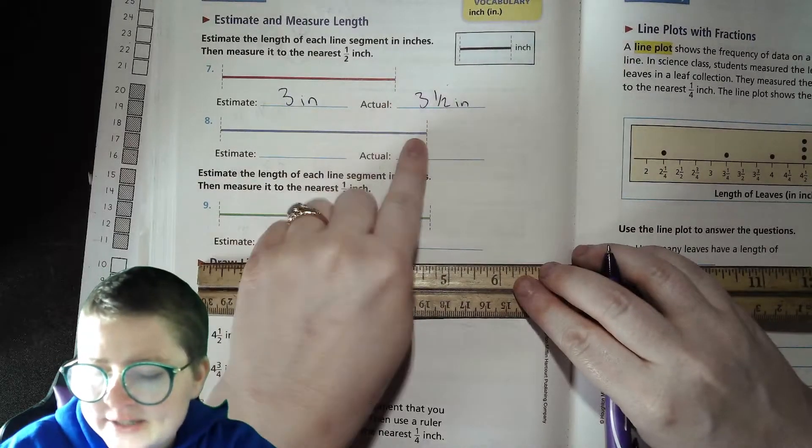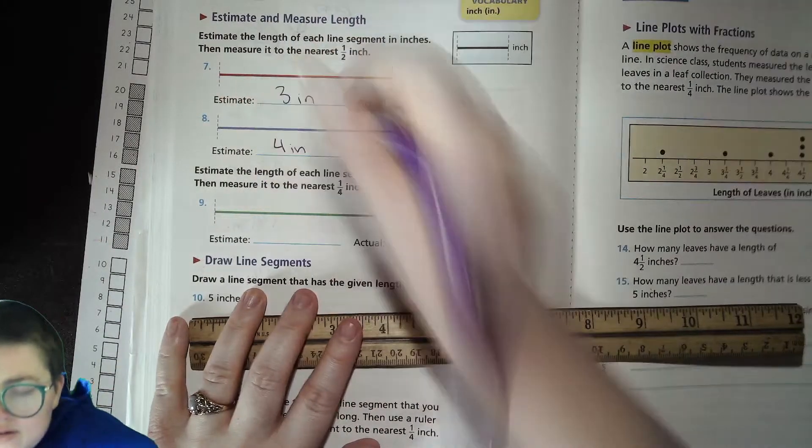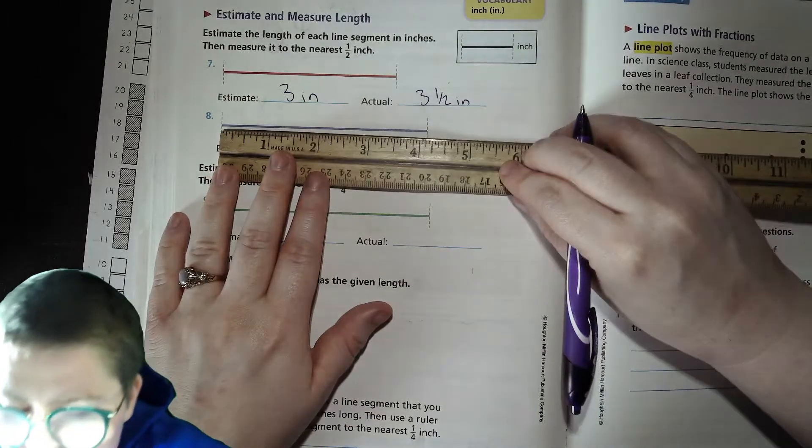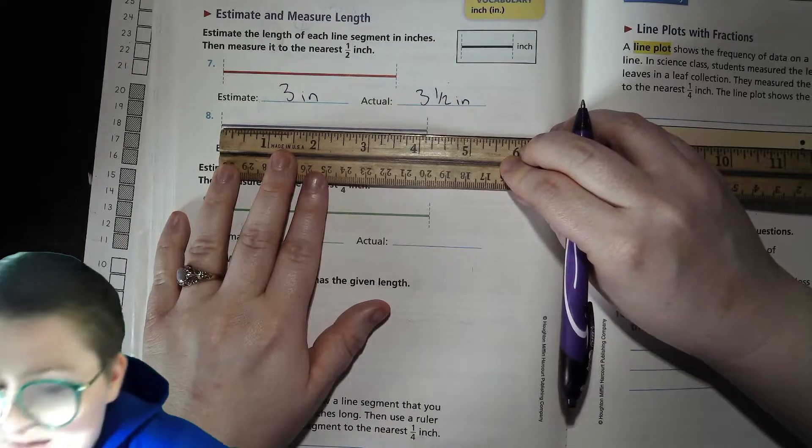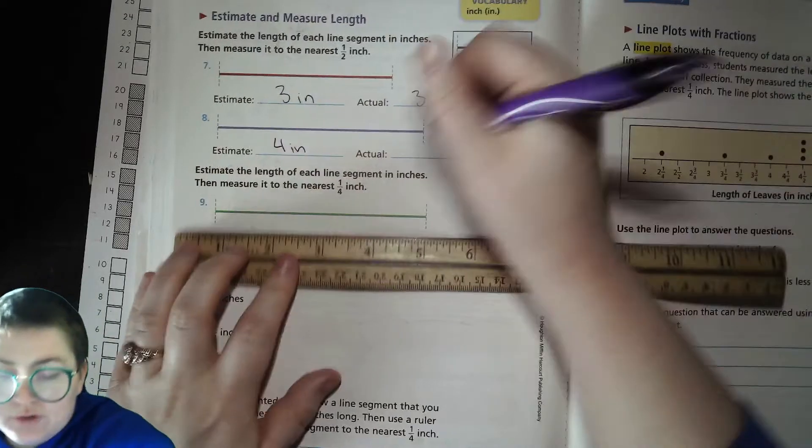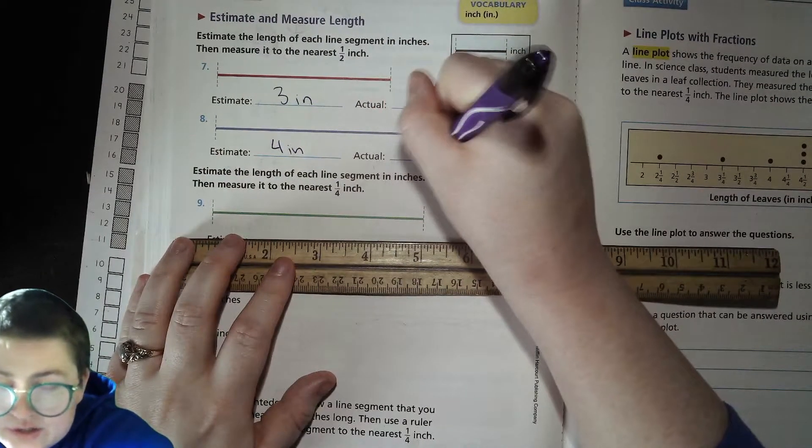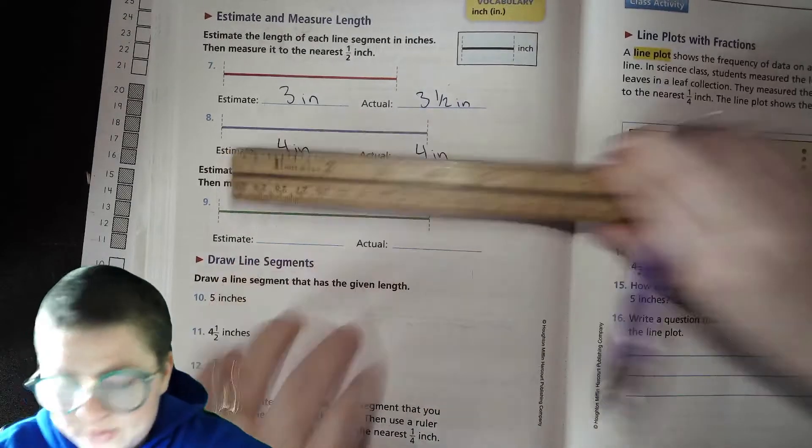Here, since this is three and a half, I'm going to say maybe this is four inches. Let's see, measuring. Well, we're measuring to the nearest half inch. It's just a little bit beyond four inches, so I'm pretty close. Four inches.